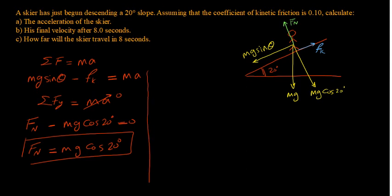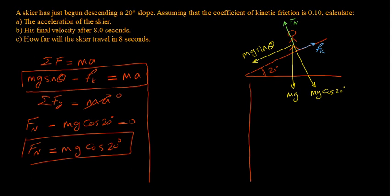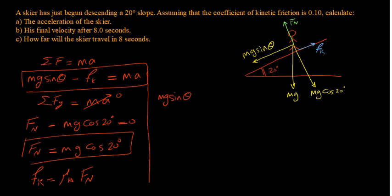We still don't know the mass, but it turns out we don't need it. Going back to the first equation and recalling that the kinetic friction force equals the coefficient of kinetic friction multiplied by the normal force, we substitute: mg sine theta minus the coefficient multiplied by mg cosine theta equals ma. Looking carefully, we can see that the mass appears on both sides of the equation.